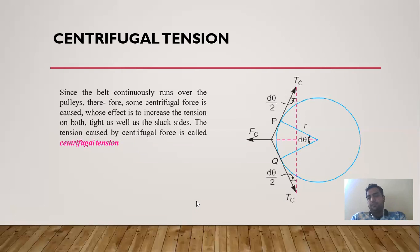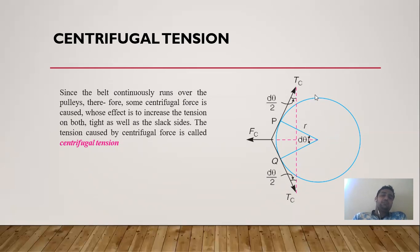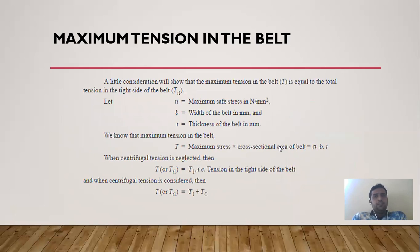Centrifugal tension: since the belt continuously runs over the pulley, centrifugal forces cause an increase in tension on both the tight side and slack side. This additional tension due to centrifugal force is called centrifugal tension. When the drum rotates, centrifugal force increases tension on both slack and tight sides.